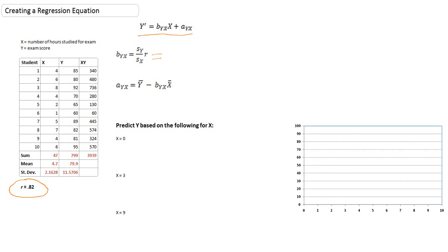For this example, we will be taking the standard deviation of y, dividing by the standard deviation of x, then multiplying by r. The standard deviation that we have already calculated for y, as we can see over here in our table, is 11.5706. I will put that in the numerator.